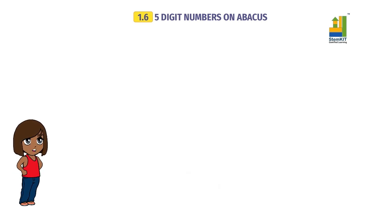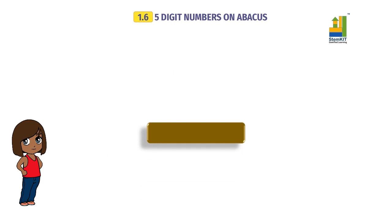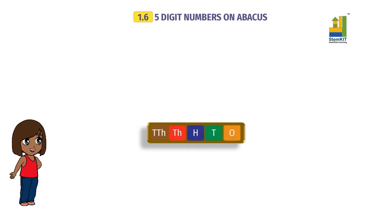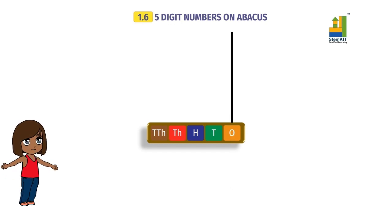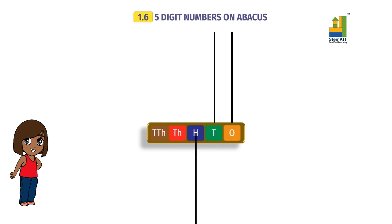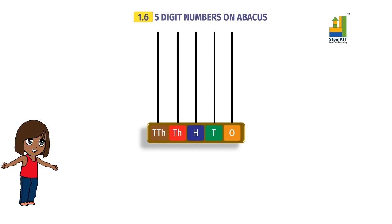Let us construct a spike abacus. We have a wooden board. For clarity, we have inserted the place values for each spike. Here come the spikes: one spike, ten spike, hundred spike, thousand spike, and ten thousand spike.